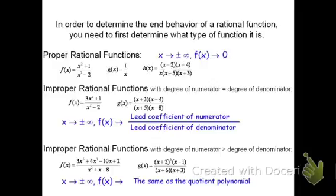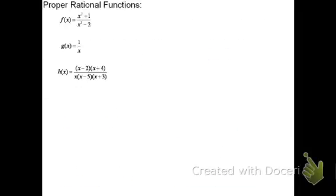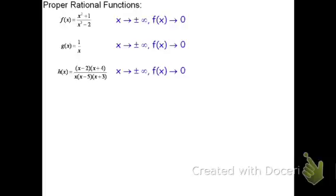So let's start again with the proper rational functions. Any time you have a proper rational function, such as these three, where the degree on the bottom is greater than the degree on the top, then we know that as x goes to either positive or negative infinity, f will always go to zero. So for all of these, f is going to go to zero. These are all proper rational functions, and this is true for all proper rational functions.